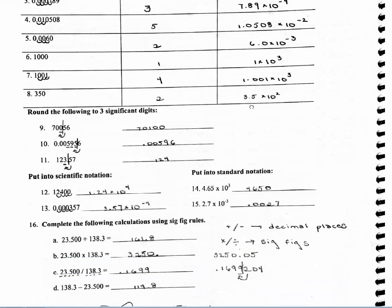For the next problem, for counting significant figures, these three zeros do not count as significant figures — so just the 6 and the 0, giving 2 significant figures. I move my decimal place over 3 places, so it will be 6.0 times 10 to the negative 3rd. Notice I did include the .0 here so that it would be 2 significant figures in scientific notation.